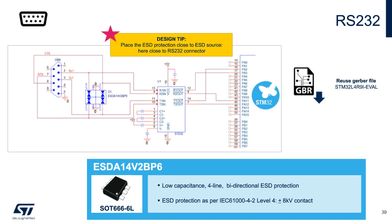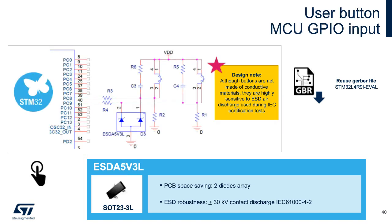The last example selected covers user buttons and consequently protection of microcontroller GPIO inputs. These mechanical buttons, being part of the application and exposed to the outside environment, are still highly sensitive to ESD and are also stressed during the IEC certification test. Besides the ESD robustness level, a key protection device requirement is the size of the package to keep the PCB space occupation small. The small package size is often a general customer requirement for any protection device.